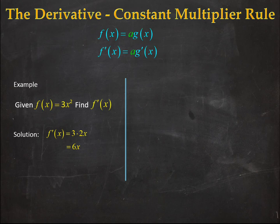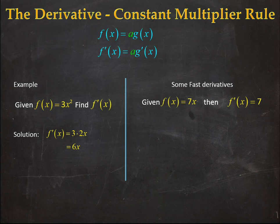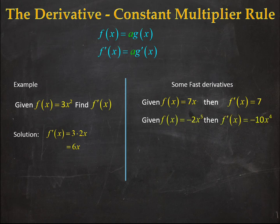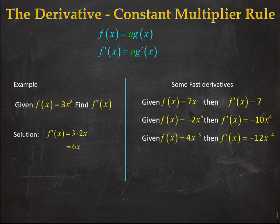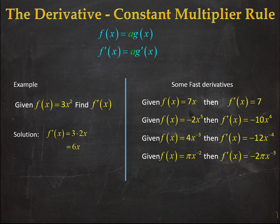Let's do a whole bunch of fast derivatives. If f(x) = 7x, it's just seven times the derivative of x, which is one, so the derivative is seven. How about -2x⁵? This is -2 times 5, which is -10, so my derivative is -10x⁴. How about 4x⁻³? That's 4 times -3, which is -12x⁻⁴. How about πx⁻²? That's -2πx⁻³.